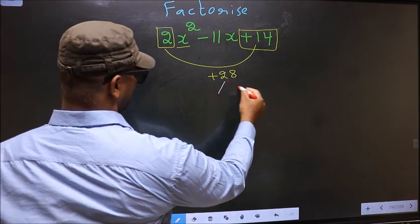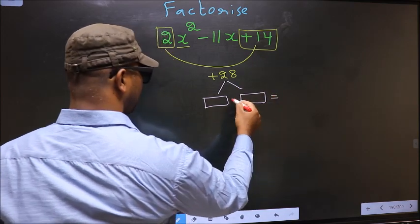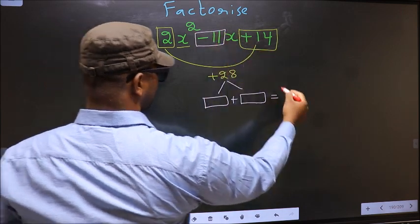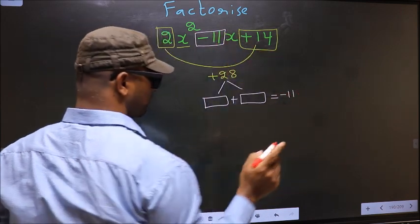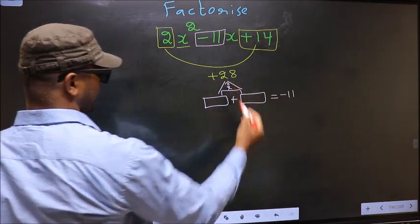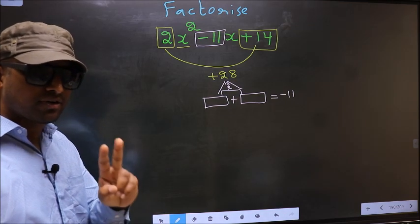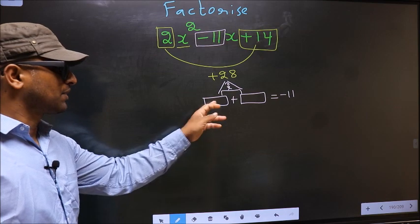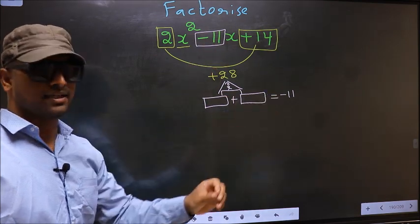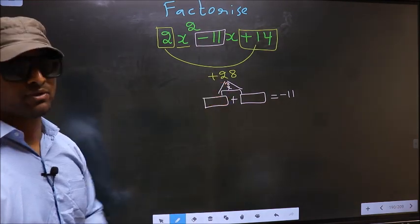Now you should look out for two numbers such that when we add these two numbers we should get middle coefficient -11, and also when multiplied you should get +28.